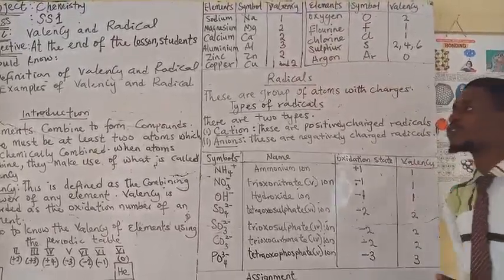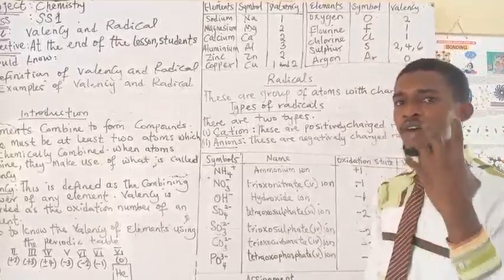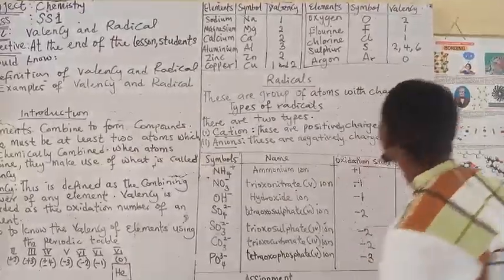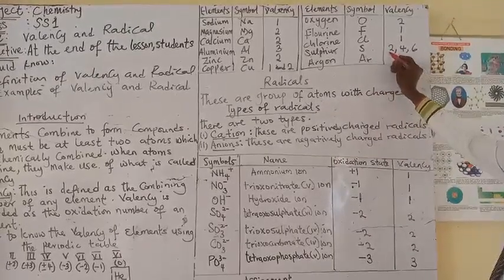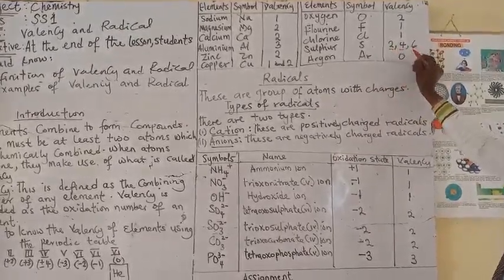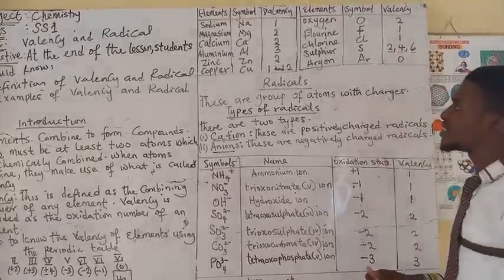You should also understand that some elements have more than one valency. Like for instance, sulfur on the board have a valency of 2, 4 and 6. So elements can have more than one valency.